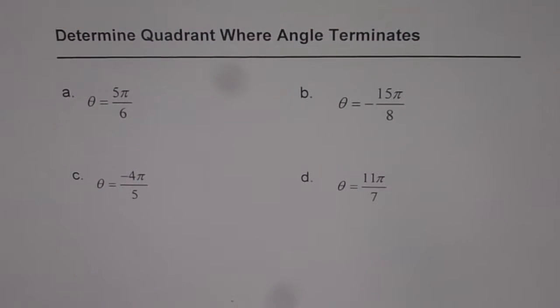Determine quadrant where angle terminates. I am Anil Kumar and on request of my student, here is a question. A very simple way of finding where the terminal arm of the angle will be when the angle is given in radians. So we have four different examples here. Let's do them one by one.